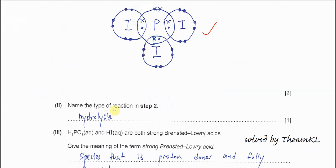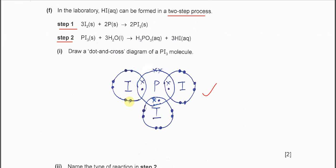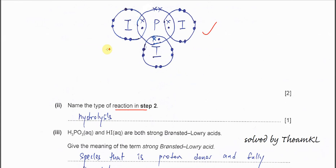Name the type of reaction in step 2. Step two is PI3 reacts with water to form H3PO3 and HI. PI3 now reacts with water to form something. It must be hydrolysis. Answer is hydrolysis.